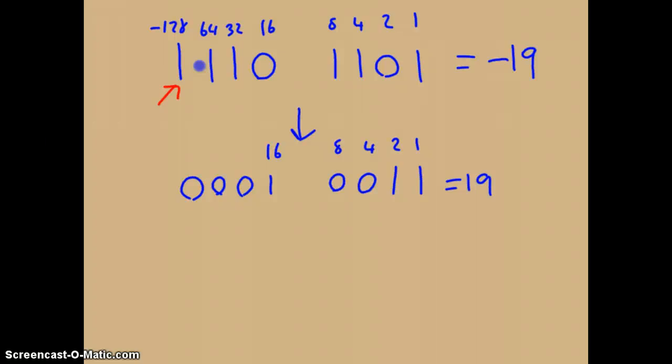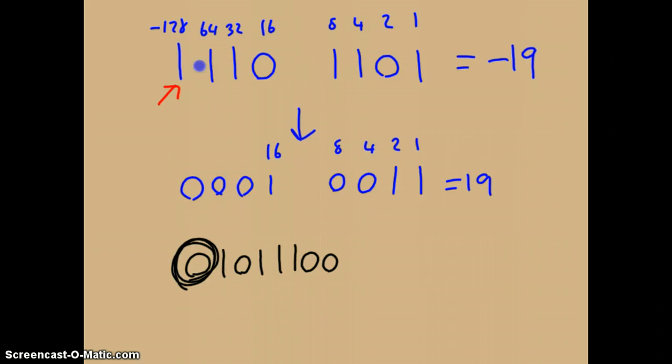One thing to be careful of, if we see a 2's complement number, and it looks like this, then because it starts with a 0, we can see that it's not a negative number. It's actually a positive number. Therefore, we just work it out exactly the same way as a normal binary integer.